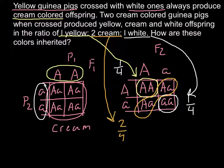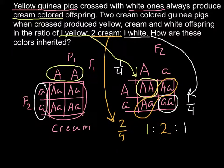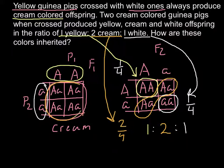So the ratio would be 1 yellow, 2 cream, 1 white — exactly what we have in the problem: one yellow, two cream, and one white. The explanation is simple: the capital A allele is incompletely dominant over the recessive allele, small a. When we cross them, the intermediate color is cream. The parents of the F2 generation would also be cream colored.